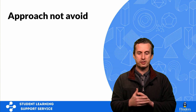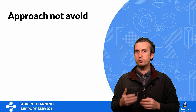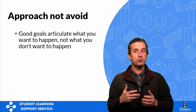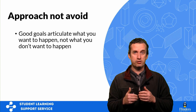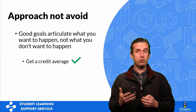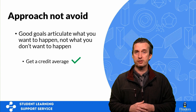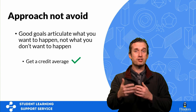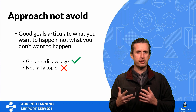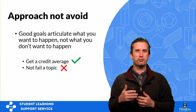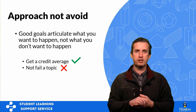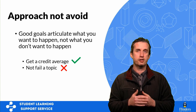Characteristic four: good goals tend to be about what you want to achieve rather than what you want to avoid. Good goals articulate what you want to happen, not what you don't want to happen. For example, a good study goal would be to get a credit average for the semester — that's phrased as something you want to move towards. A not-so-great goal would be: I don't want to fail a topic this semester. That's okay, but it's better to articulate goals as things we want to approach rather than things we want to avoid.